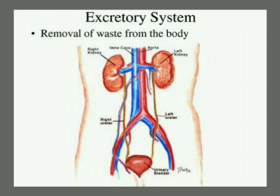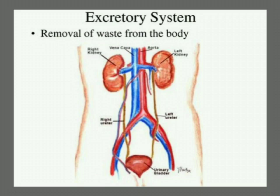Next is ureter. It is the tube which collects the urine from the kidney to the urinary bladder. Imagine a funnel — in the same way, the urine that is filtered from the kidney is removed to the urinary bladder. That is called the ureter. It is a pair of narrow muscular tubes through which urine passes from the kidney to the urinary bladder.